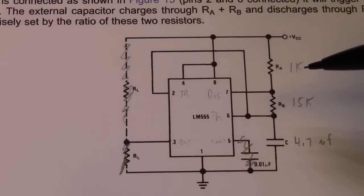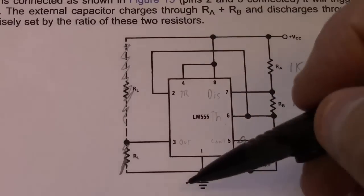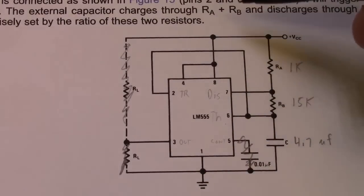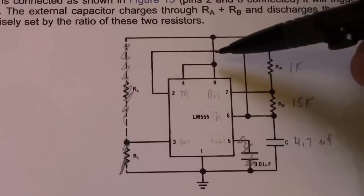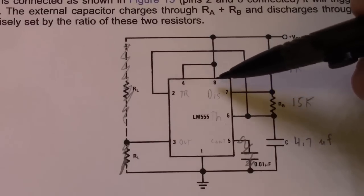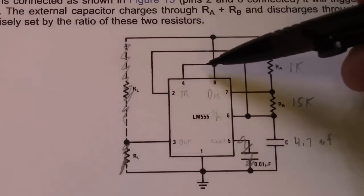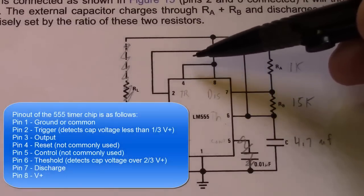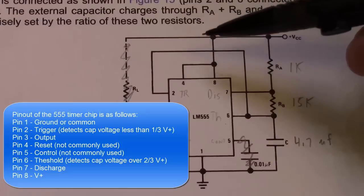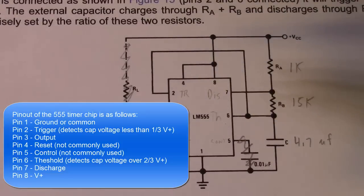Pin one is our ground, pin eight is the power for the chip - every chip needs power. Pin four is the reset pin, and it's an active low triggered input, which means when you bring this low the chip resets. If you bring it to V plus, you don't reset the chip and it will work producing a high and low output.